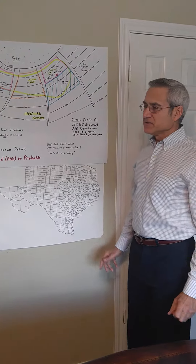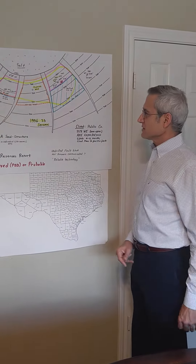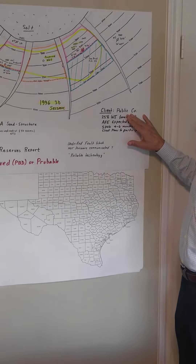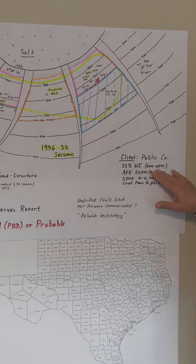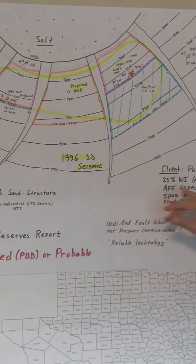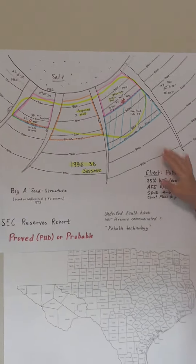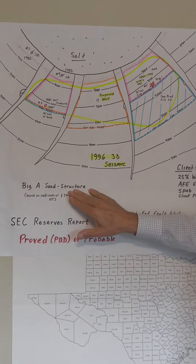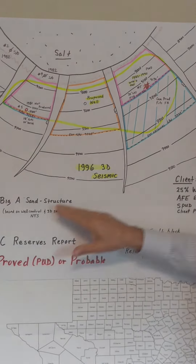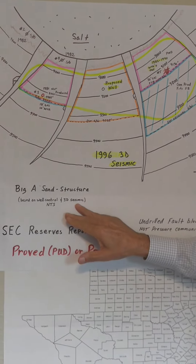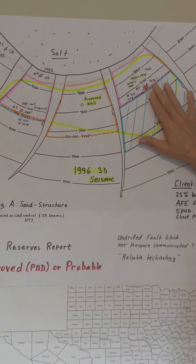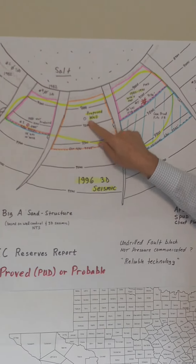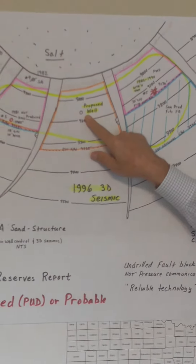Today's video is for all my reservoir engineering friends that do reserve calculations. The situation is I have a client that's a public company. They own 25% working interest in this field, but they're not the operator. They provided me with a geologic map on the big A sand structure that's based on well control and 3D seismic. They have a produced well here and a productive well here, but they have identified a prospect well here.